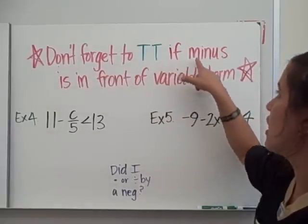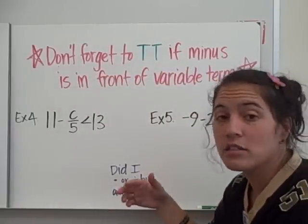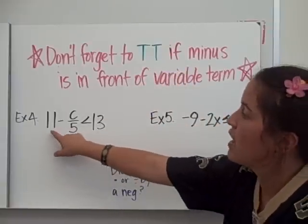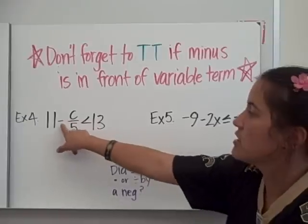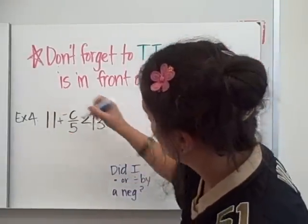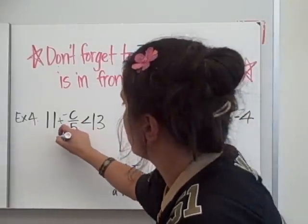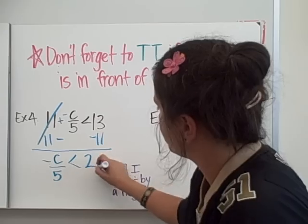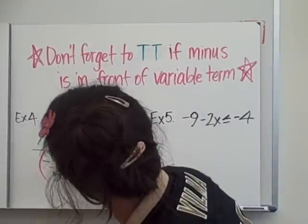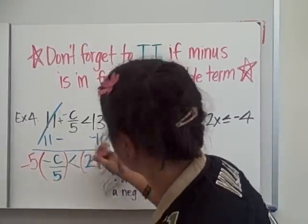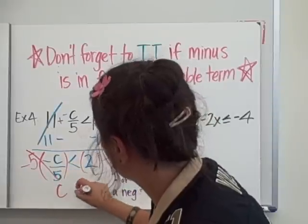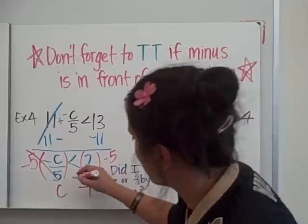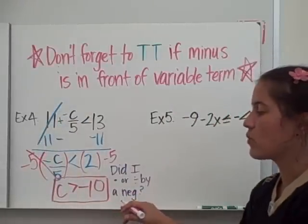So just a quick reminder: don't forget to touch twice if the minus is in front of the variable term. We haven't talked about this since we did two-step equations and multi-step equations, so don't forget — if the minus is in front of the variable we have to touch twice. So let's look at number 4: 11 minus c over 5 is less than 2. We're going to subtract 11 from both sides, so negative c over 5 is less than 2. This is division, so we're going to multiply both sides by negative 5 because of that negative. 2 times negative 5 is negative 10. Did I multiply both sides by a negative? I did. So my inequality symbol is going to switch, and my answer is c is greater than negative 10.